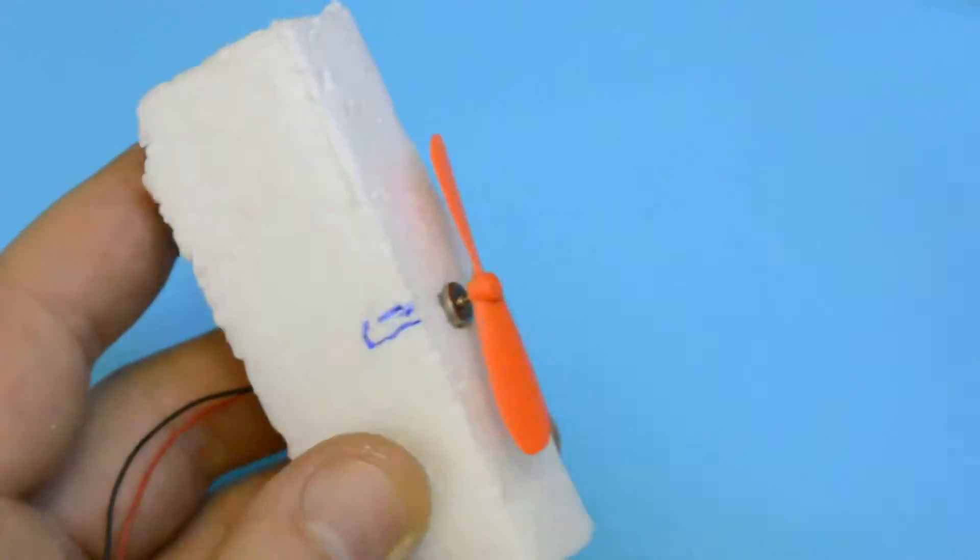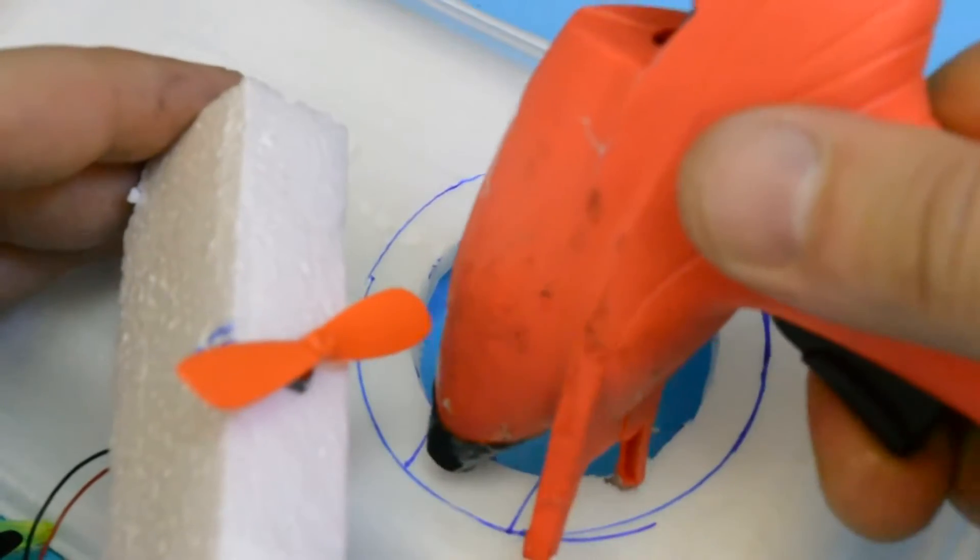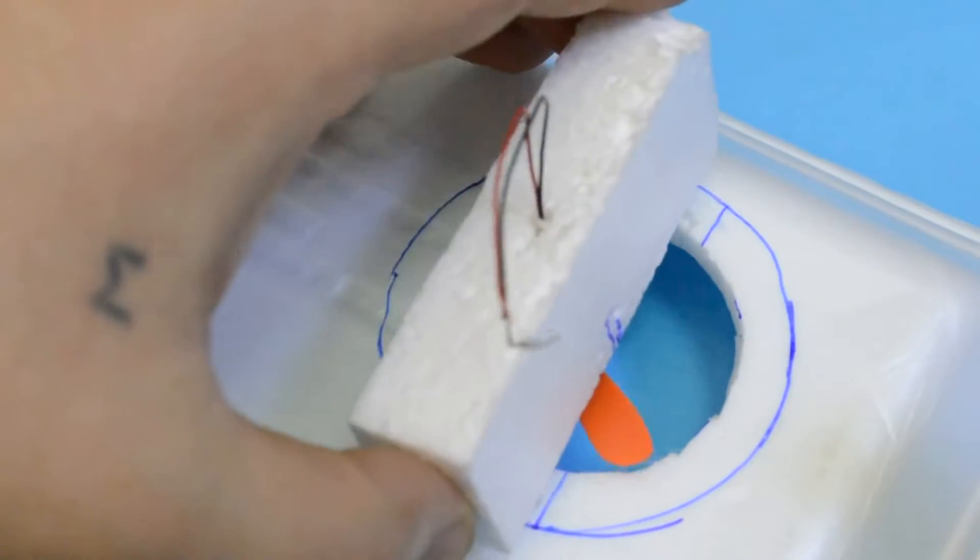All styrofoam parts must be glued with a hot glue gun. Do not use ordinary glue. This will melt styrofoam.